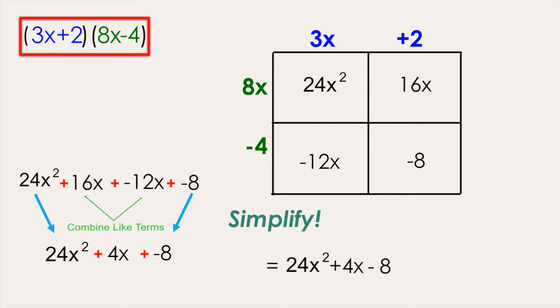So the product of the two binomials, 3x plus 2 times 8x minus 4, is the polynomial 24x squared plus 4x minus 8, and this is using the multiplication table or the box method.